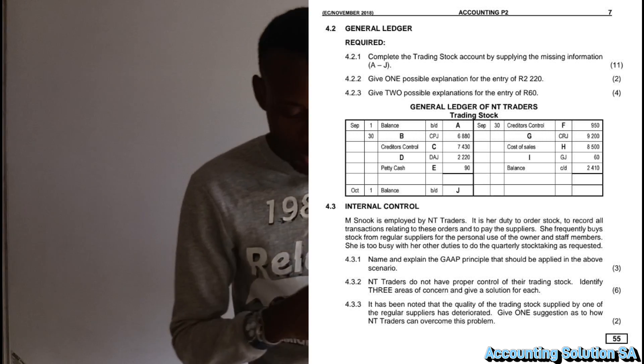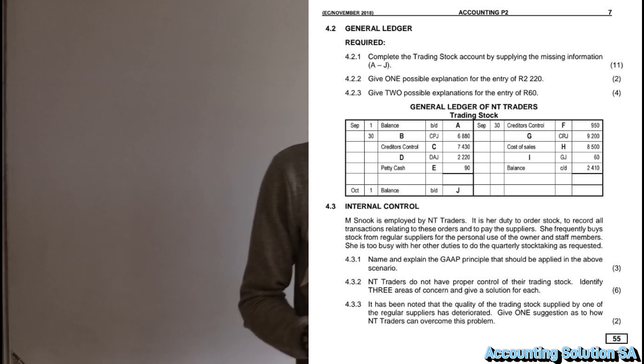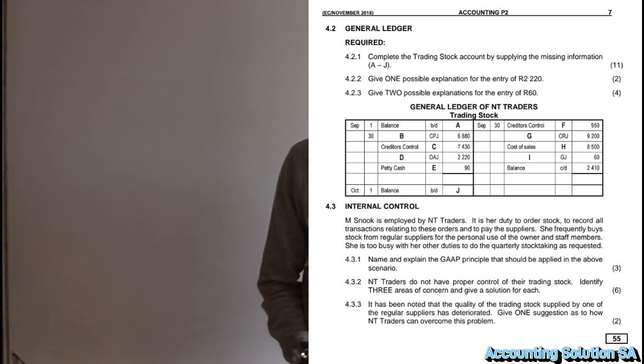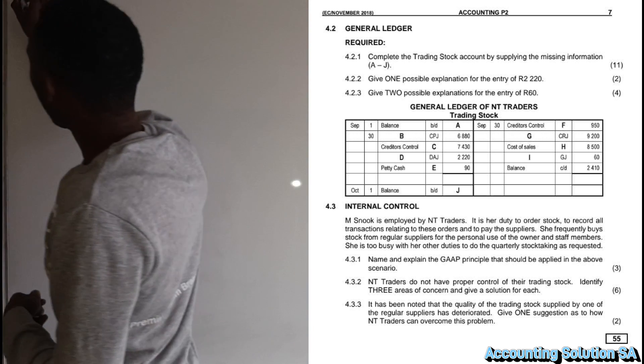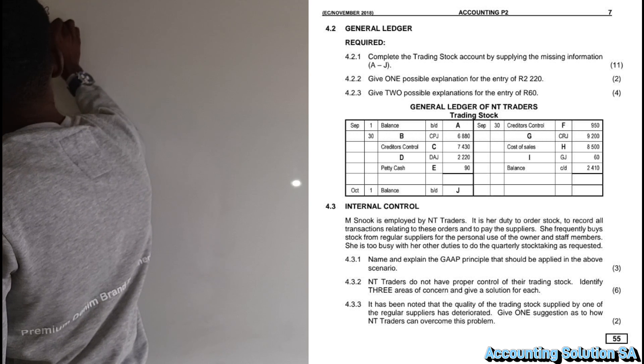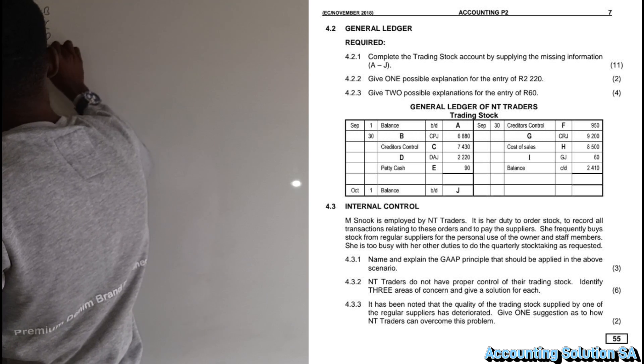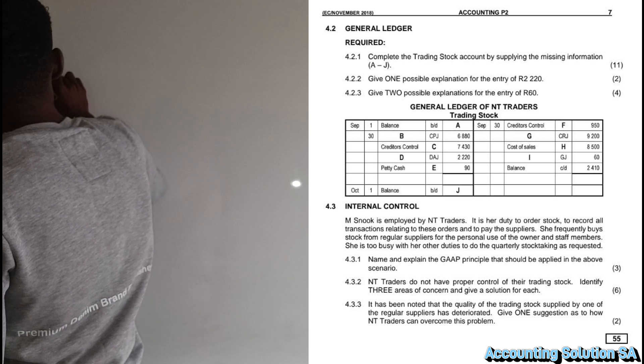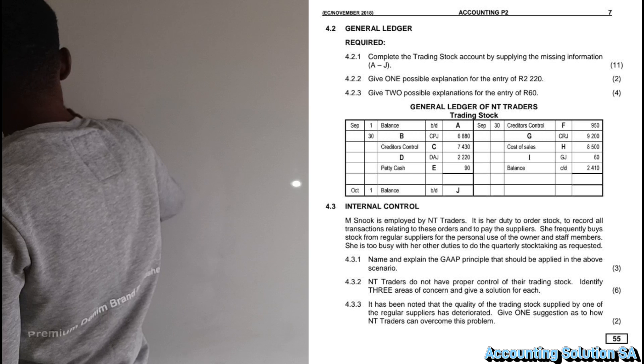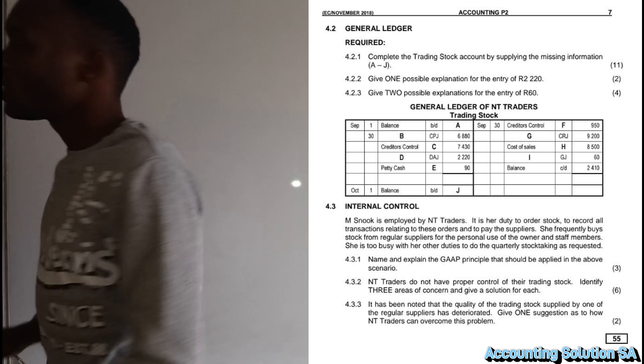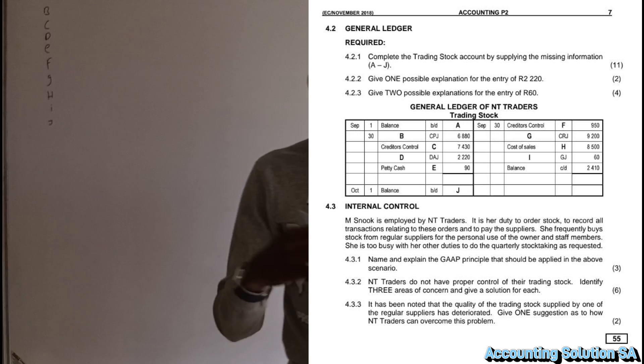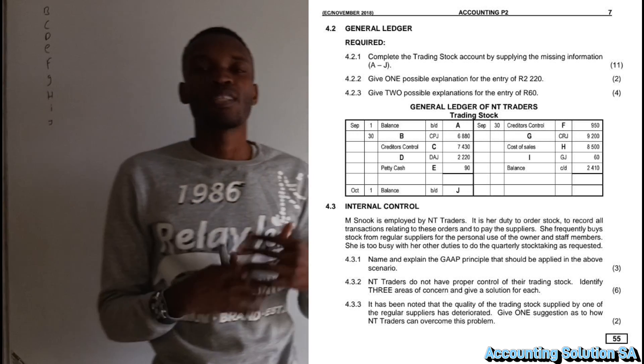If you can see, we have been given a trading stock account that we've been given with numbers A up to J. That's the information that we need to fill. Let me lay down here: A, B, C, D, E, F, G, H, I, and J. We need answers for all these alphabets.